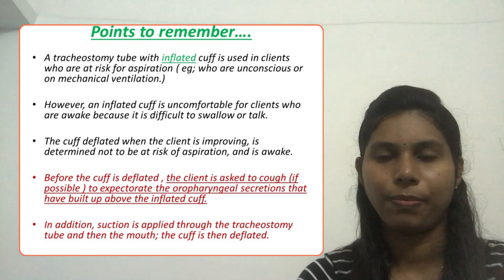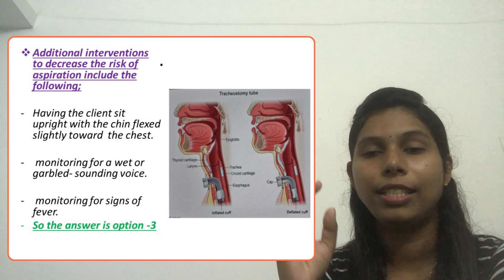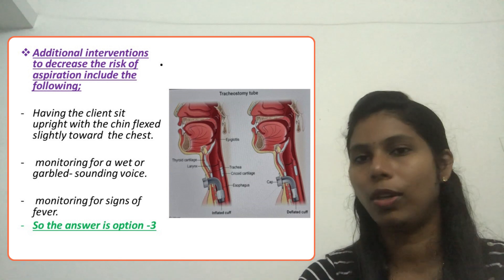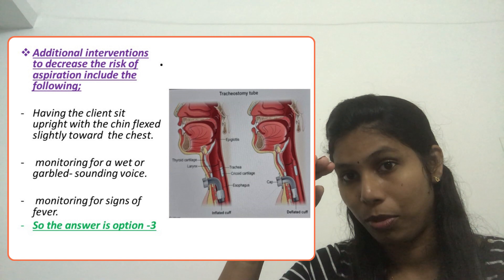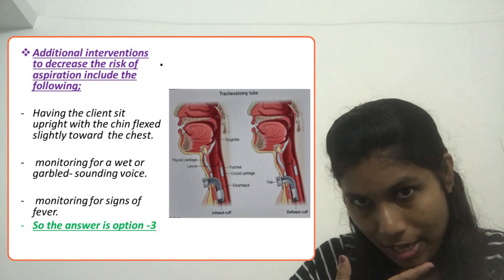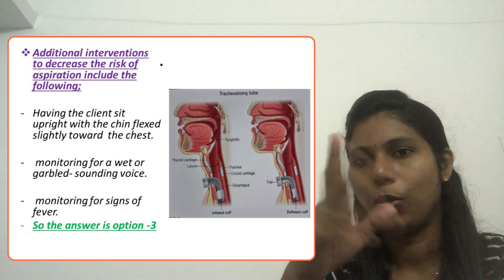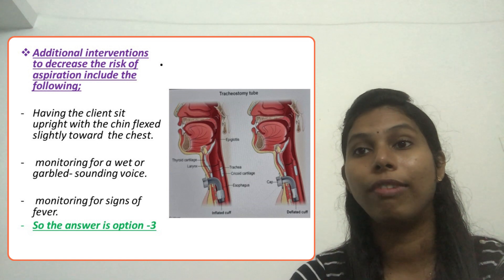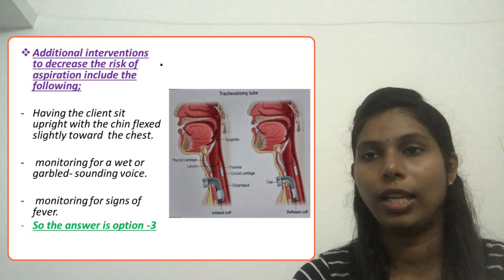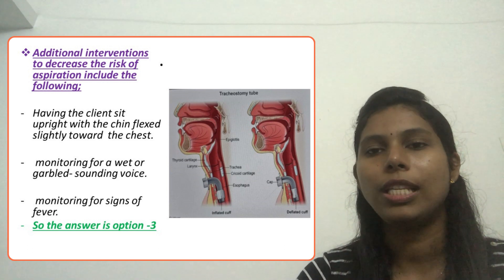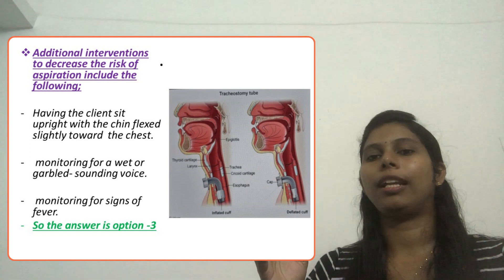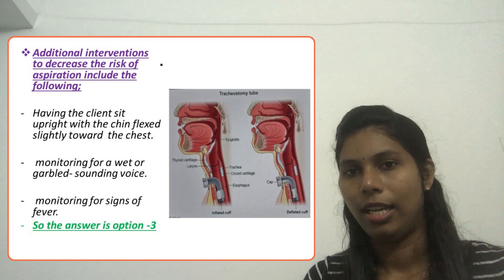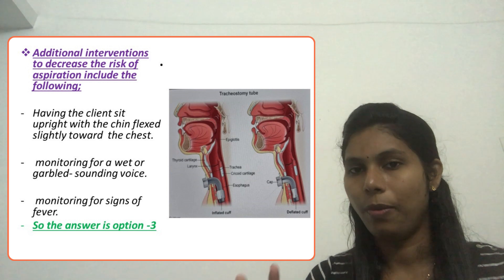Additional interventions include having the client sit upright with the chin slightly flexed towards the chest — not hyperextended as one option states, which is incorrect. We should also monitor for a wet or garbled sounding voice, and monitor for signs of fever. These are the main interventions for a tracheostomy client who is alert, oriented, and taking oral intake to reduce the risk of aspiration pneumonia.